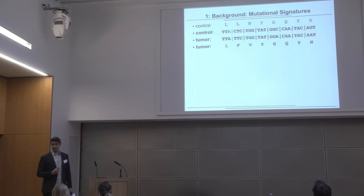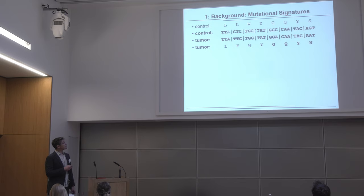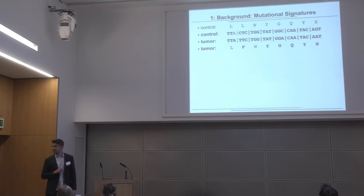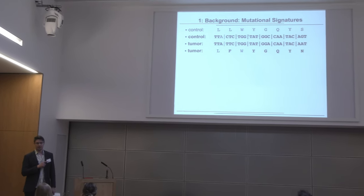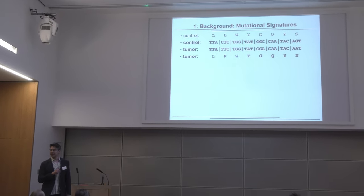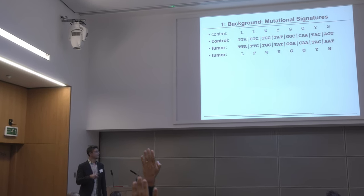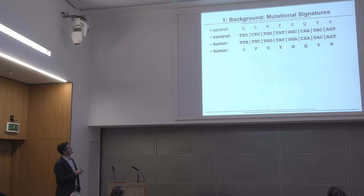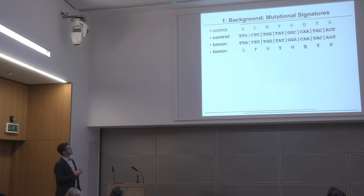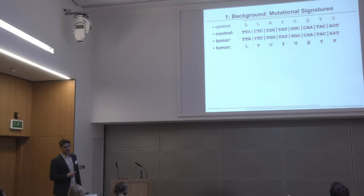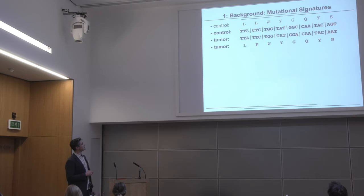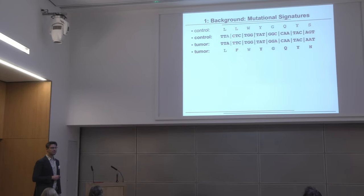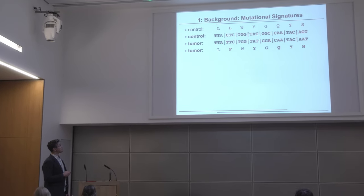Now I'd like to ask: is the concept of mutational signatures and especially the mathematical part behind it sufficiently familiar to all of you, or shall we go through the details? Here I have depicted a DNA sequence with nucleotides. In oncology, we want tumor and matched normal control sequences in order to find somatic mutations — those which are different between the tumor sample and the control sample.